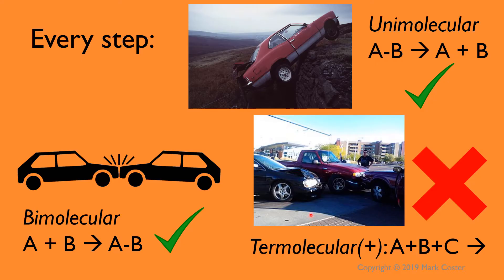Rule number one: every step of the mechanism should have either a unimolecular process or a bimolecular process. Unimolecular is when one molecule spontaneously breaks a bond and we get more than one component released. A bimolecular process is the opposite — two fragments come together to make one new molecule, going through some kind of energy barrier. What doesn't happen to any appreciable extent is what are called termolecular reactions.